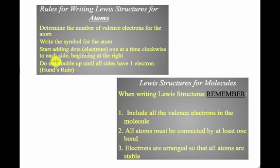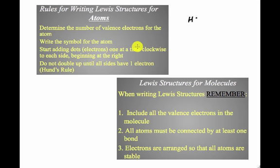Let's look at some stuff regarding molecules and atoms. Atoms are pretty simple — all you do is determine the number of valence electrons based on the periodic table, write the chemical symbol, and put the electrons around it. For hydrogen, you just need one valence electron. It doesn't really matter which side you put it on, as long as you have one valence electron around that hydrogen.